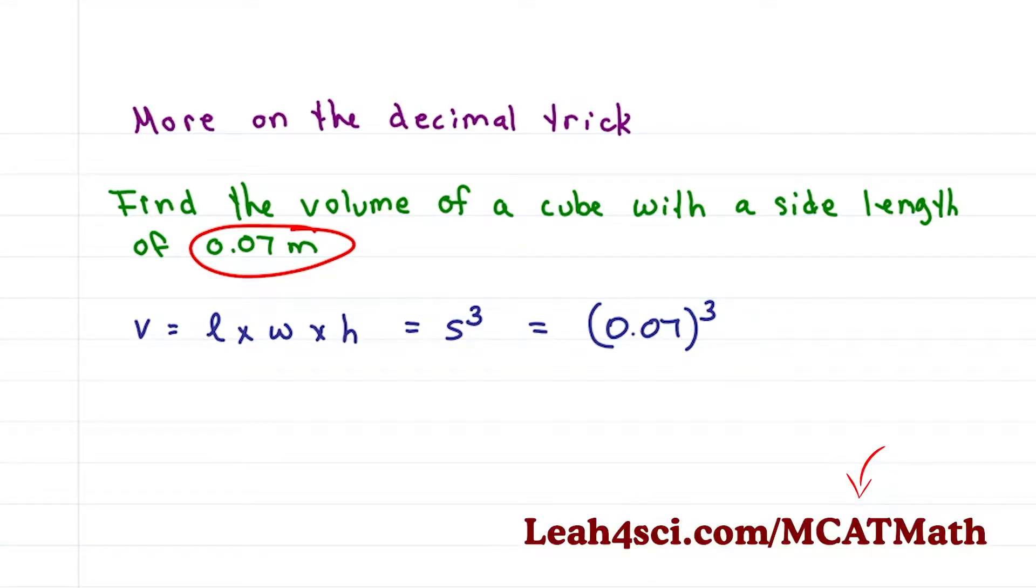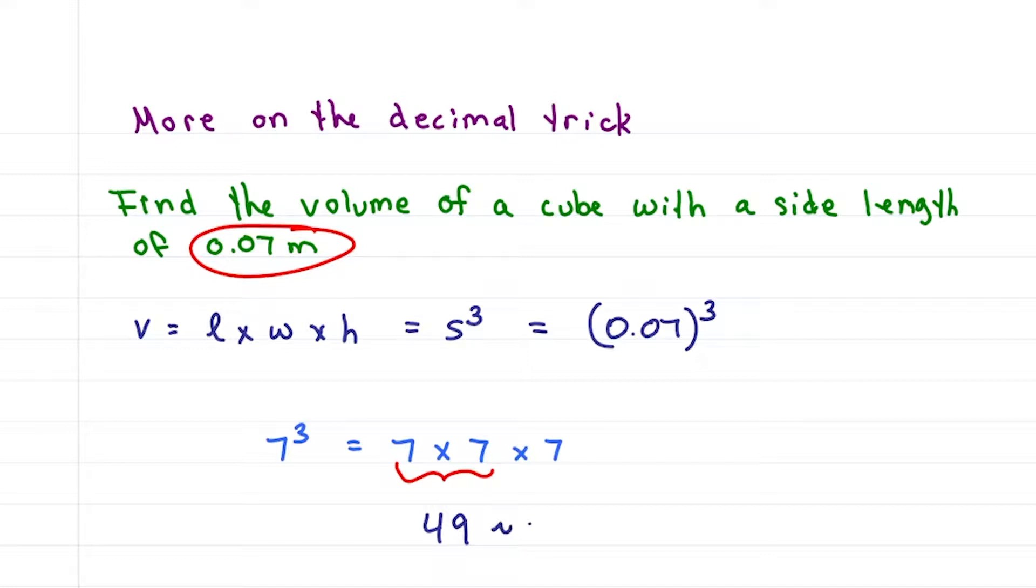Don't worry, I have an entire video on this below. If you haven't memorized seven to the third, break it down. That's seven times seven which is 49 times seven which, let's say about 50 times seven. Seven times five is 35. Add the zero back, we get about 350.